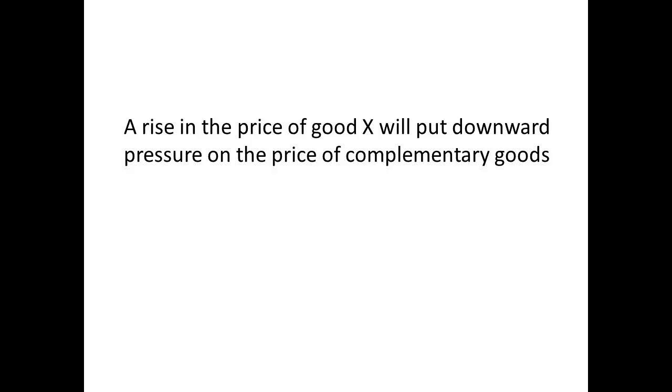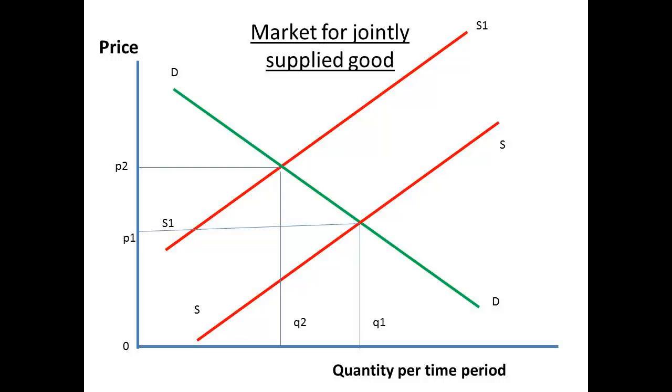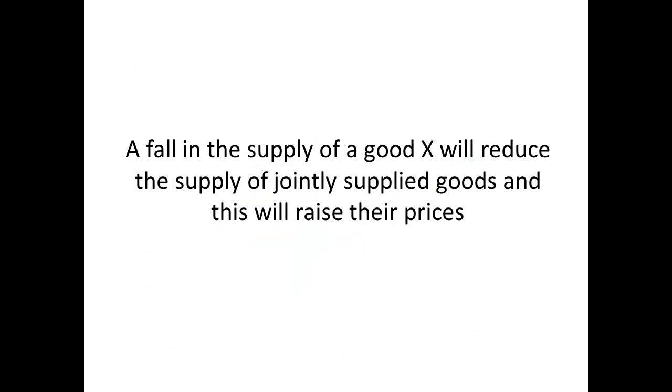We said that cod liver oil was a jointly supplied good. If there is less cod, then there will also be less cod liver oil being produced. Before the supply was reduced, the equilibrium point was at price P1 and quantity Q1. Reducing the supply shifts the supply curve from SS to S1S1. The new equilibrium point will be established at the higher price, P2, with the reduced quantity of Q2 being supplied. The effect is that a fall in the supply of X will reduce the supply of jointly supplied goods and will exert an upward pressure on their price.